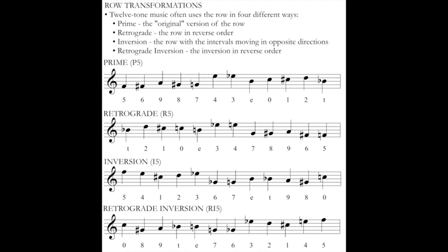Another common transformation is the inversion. The inversion takes the prime form but has the intervals moving in the opposite direction. Looking at the prime form: I move from F to F-sharp — up a half step — then from F-sharp to A — up three semitones — then down to G-sharp and down to G-natural — down two semitones. The interval sequence is +1, +3, -1, -1. In my inversion, I5, I start on F but go down a half step to E rather than up to F-sharp, then down three semitones to C-sharp, then up two semitones from C-sharp to D, and from D to E-flat. I've taken the same intervals and just switched the direction.